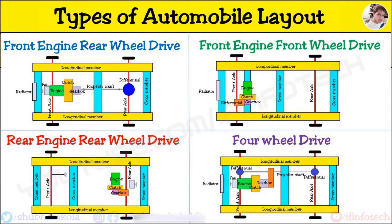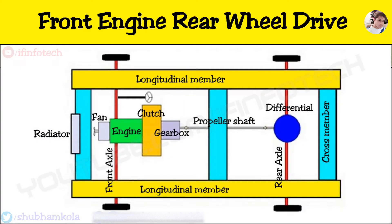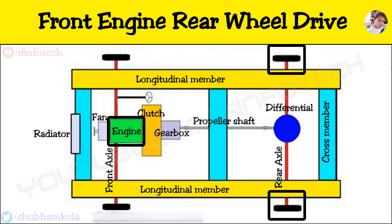Hello everyone. In this video, I will show you layouts of an automobile. There are four types of automobile layout. Today I will discuss the front engine rear wheel drive type of layout. The name itself tells us that the engine is placed at the front side of a vehicle and the driven wheels are located at the rear end. This configuration is known as front engine rear wheel drive.